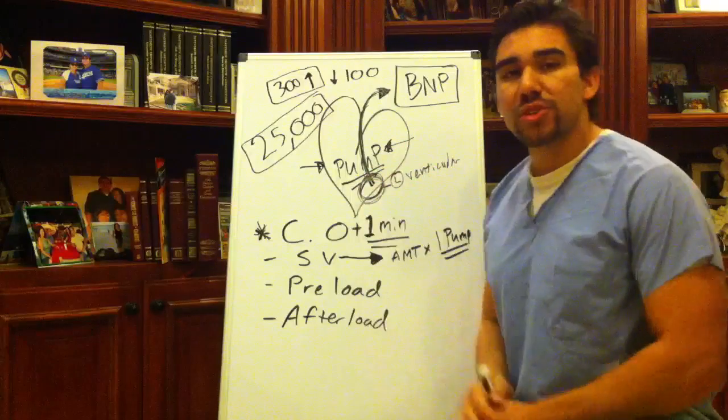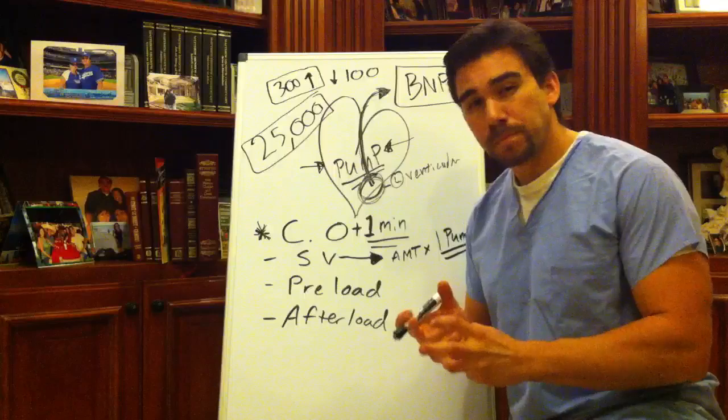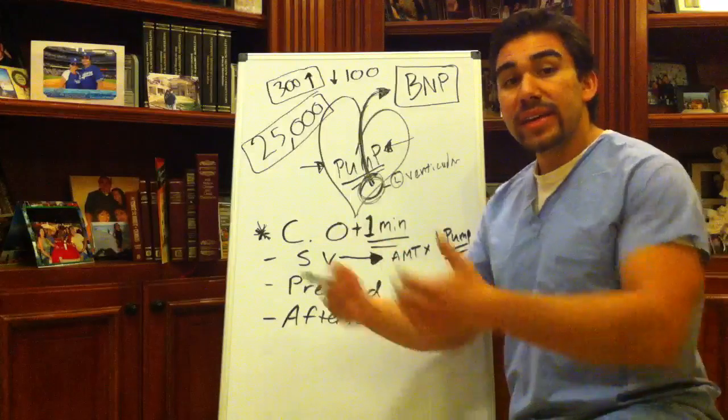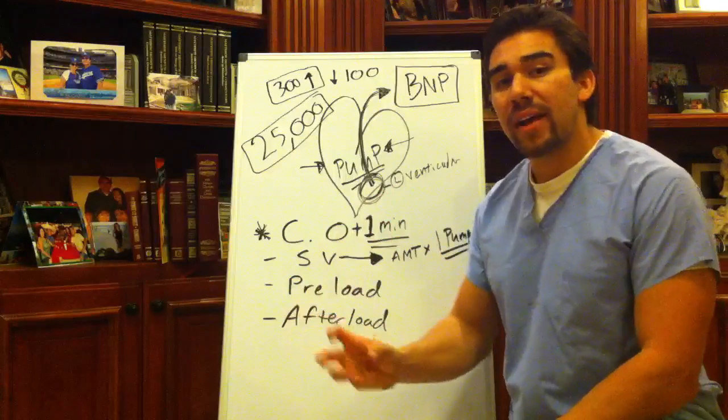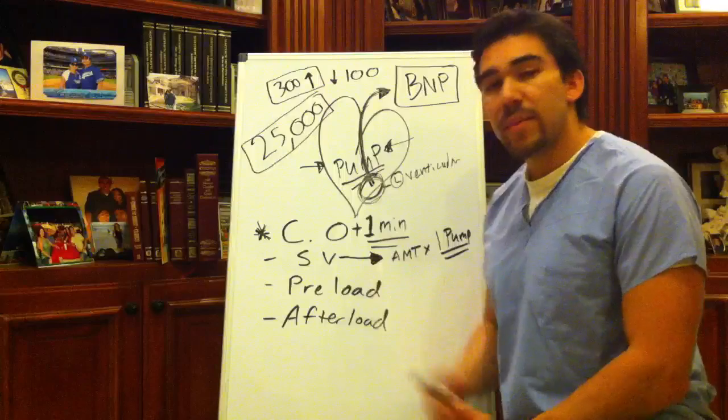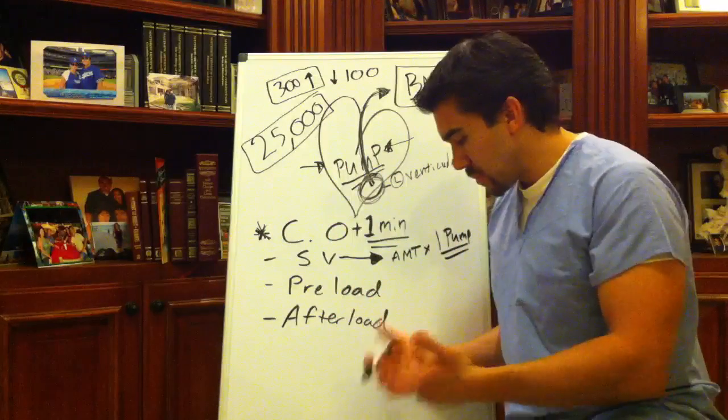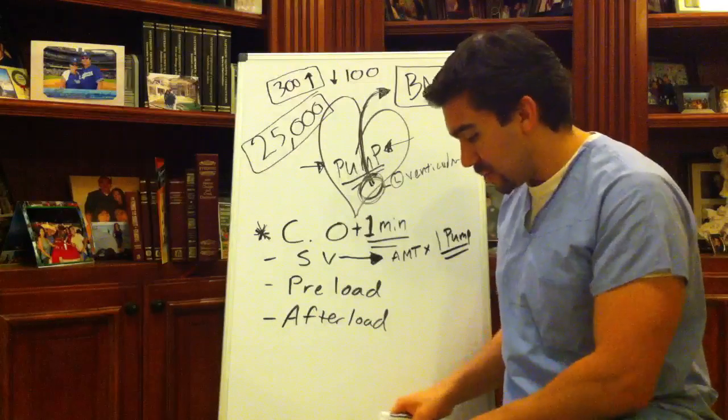So, that left ventricle was having a failure to pump. Does that make sense? I hope it does. Because the cardiac output now is being decreased. Because you can't push a lot of blood out in that one minute. That stroke volume and the amount of blood that's being pumped has so much resistance against it. And this is where we get to preload and afterload.